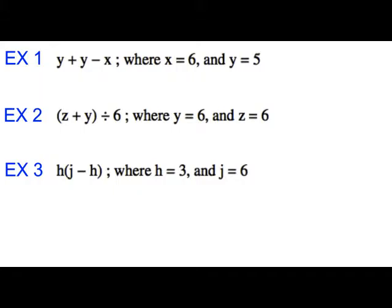Example one says y plus y minus x where x equals 6 and y equals 5. So everywhere that we see a y we're going to put in a 5 and everywhere that we see an x we're going to put in a 6. So my problem becomes 5 plus 5 minus 6. Now we do have to remember to do the order of operations. We then do the problem from left to right when it involves addition and subtraction. So we get 5 plus 5 which is 10, so 10 minus 6, the answer is 4.